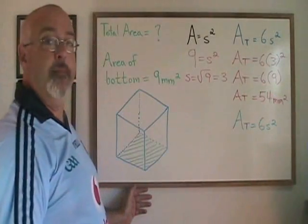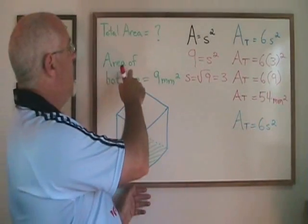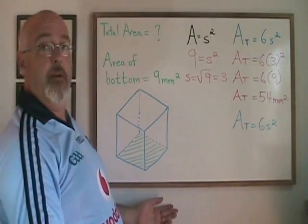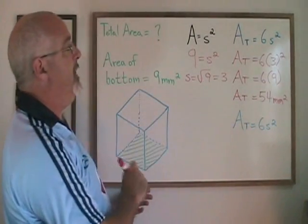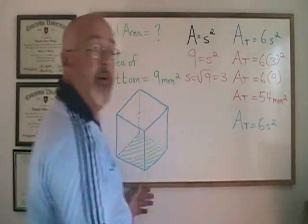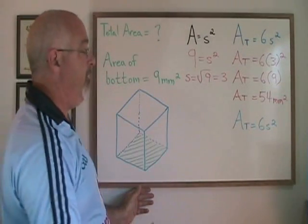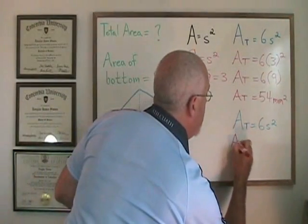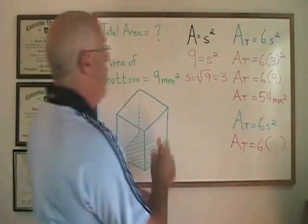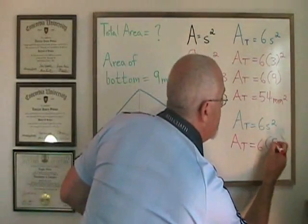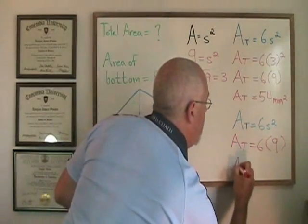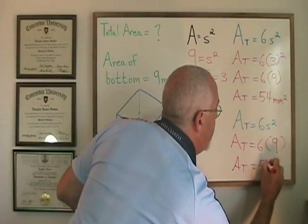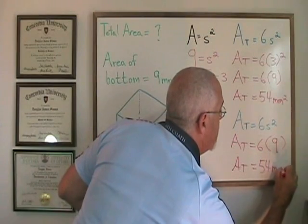A shortcut can be to realize that the area of the bottom which is equal to 9 is equal to s squared. So that means the 9 millimeters squared area of the bottom is equal to the s squared in the total area formula. I can just directly plug 9 into my s squared position and I have a total area of 54 millimeters squared.